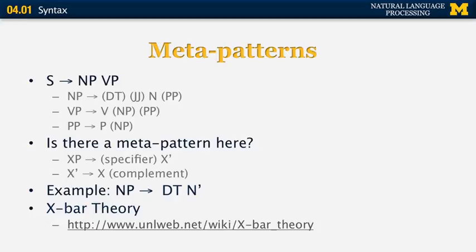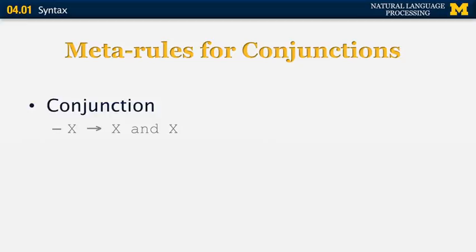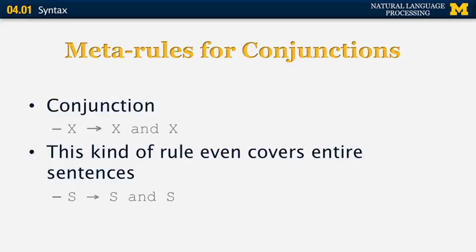Now let's look at meta rules for conjunctions. We looked at examples of NP and NP, VP and VP, and so on. In the most general case, category X generates X and X. This can be expanded to cover entire sentences: S produces S and S. For example: It is sunny today and I will go to the park.